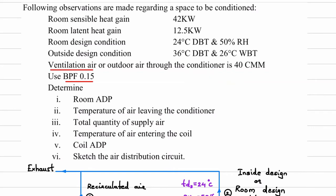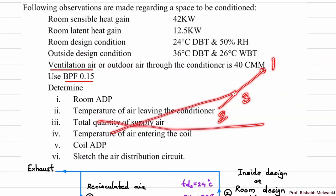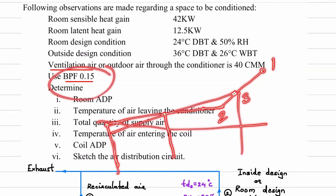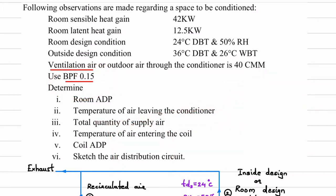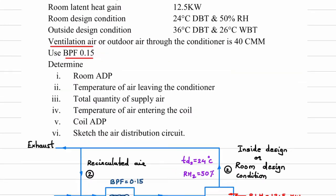Since ventilation air is given, we will calculate ERSHF. We cannot get mixing point 3 because the mixing proportion is not given. In previous numericals, the mixing proportion was given (e.g., M_dot_DA1 is 40% of M_dot_DA3), so point 3 could be found and bypass factor used on the GSHF line. Here, we don't have point 3, so we will use the ventilation air data to calculate ERSHF instead.